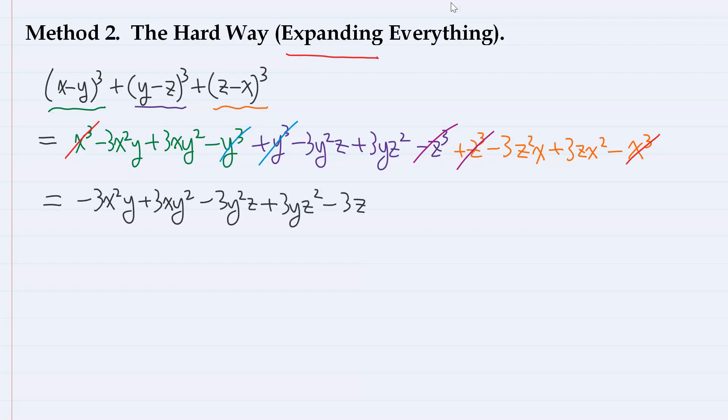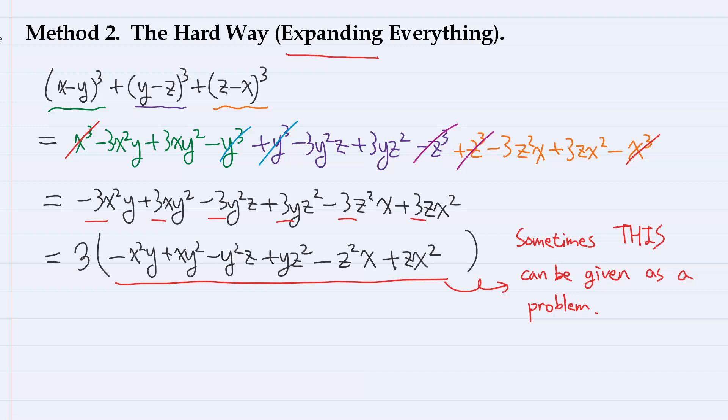So, we have this. And since all terms have 3, let us take out 3 to the front and write -x²y + xy² - y²z + yz² - z²x + zx². Now, the reason why I said this seemingly harder method is important is because sometimes, instead of this, this can be given as a problem. Well, to be fair, the middle school and high school curriculums around the world are usually not that advanced to cover this kind of factorization. But still, these kind of expressions occasionally appear in more advanced algebra of polynomials or rational expressions. So, learning a skill to factor these kinds of polynomials may turn out to be quite useful.